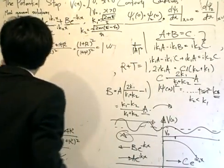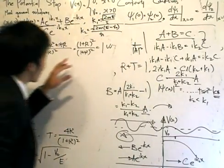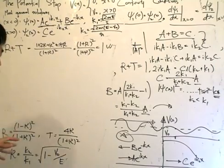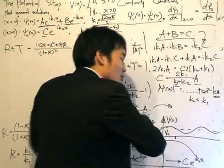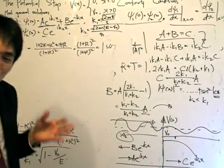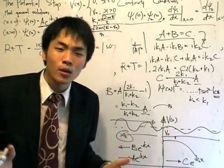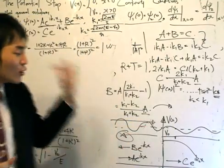The reflection coefficient add up with the transmission coefficient is equal to 1. This is like saying that the incident particles that hit the potential step, those that get reflected and those that get transmitted is conserved. It's due to the conservation of probability that we talked about briefly a few minutes ago.